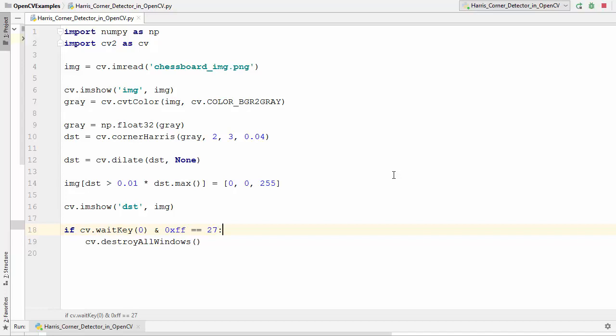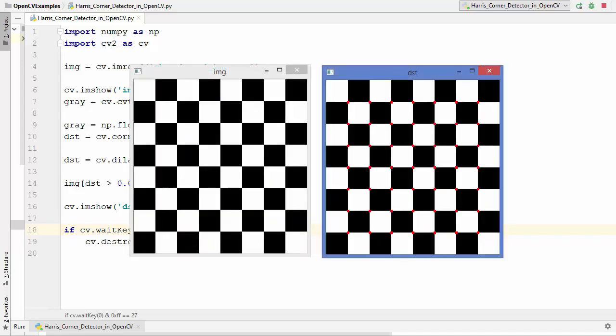Let's run this code and see the results. You can see this is the original image which has so many corners, and all the corners are detected and marked with this red color here. This is how you can find and mark all the corners using Harris corner detection in OpenCV.